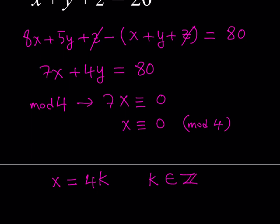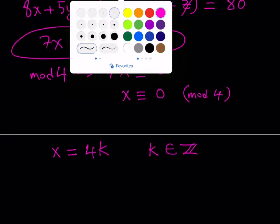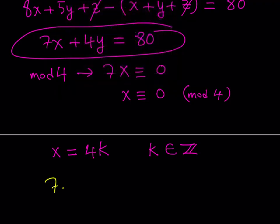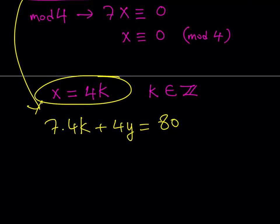To find y, what we need to do is substitute this into our original equation, not the original system, but this equation right here, and then solve for y from there. Let's substitute that value. 7 times 4k, basically replacing x with 4k, plus 4 times y equals 80. Notice this is not a congruent statement, it's just an equality. One thing you can do is divide everything by 4.